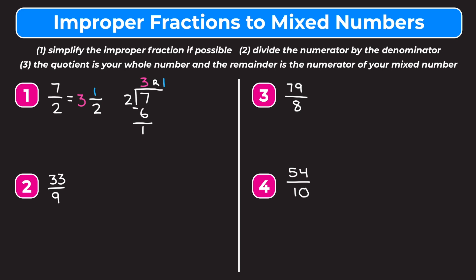Moving on to example two, we have 33 over nine. For this one we can simplify our improper fraction before we divide. We divide the top and bottom by three: 33 divided by three gives us 11 on top, and nine divided by three gives us three on the bottom. Now we need to divide the numerator by the denominator, so we set up 11 divided by three. Three can't go into one, but three can go into 11 three times, so we put a three up here.